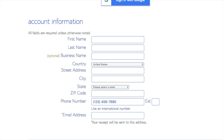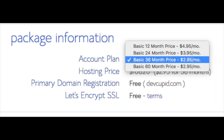You are now brought to a 'Create Your Account' page where you'll input your information: first name, last name, optional business name, country and address information, phone number, and best email address — as you'll receive a payment receipt and login credentials there. Below that you'll see Package Information where you can select a term: 12 months, 24 months, 36 months, or 60 months. You'll save money the longer you purchase hosting for. Setup fee, domain registration, and Let's Encrypt SSL are all free. The SSL certificate makes your site secure with HTTPS.